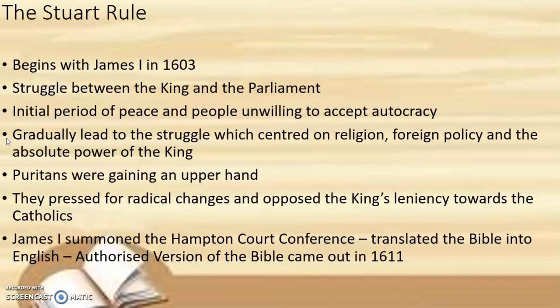It was King James I who was responsible for re-establishing parliamentary supremacy, which had been stayed under the Tudor dynasty. There was an initial period of peace, however it did not last long. The greatest event during the Stuart rule was the struggle between the king and parliament, centred on religion, foreign policy, and the absolute power of the king. The people were not willing to accept autocracy. King James was an autocratic ruler who firmly believed in the divine right of the king.